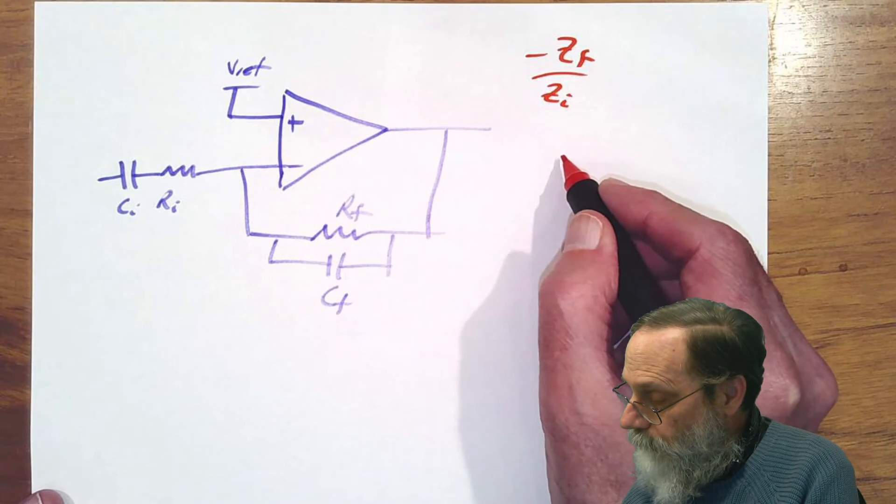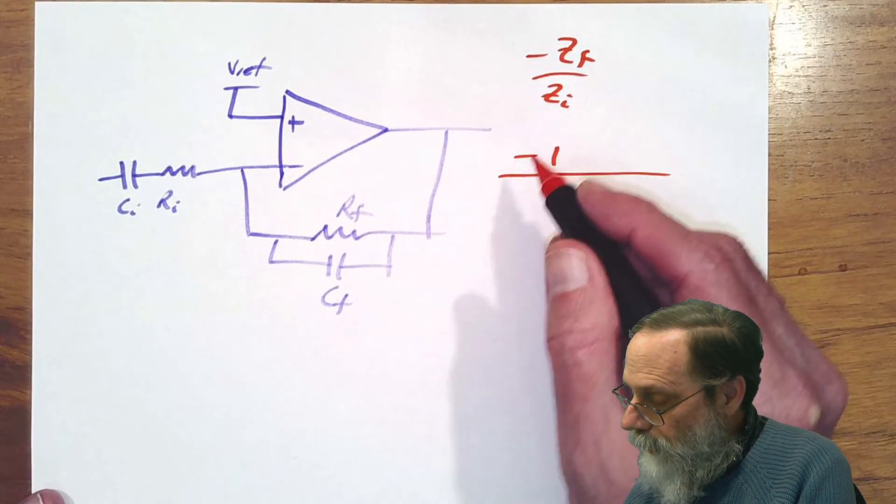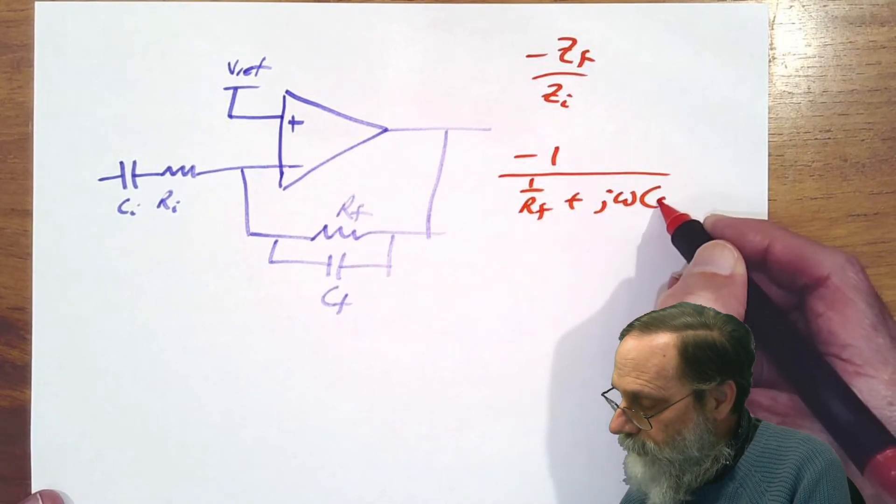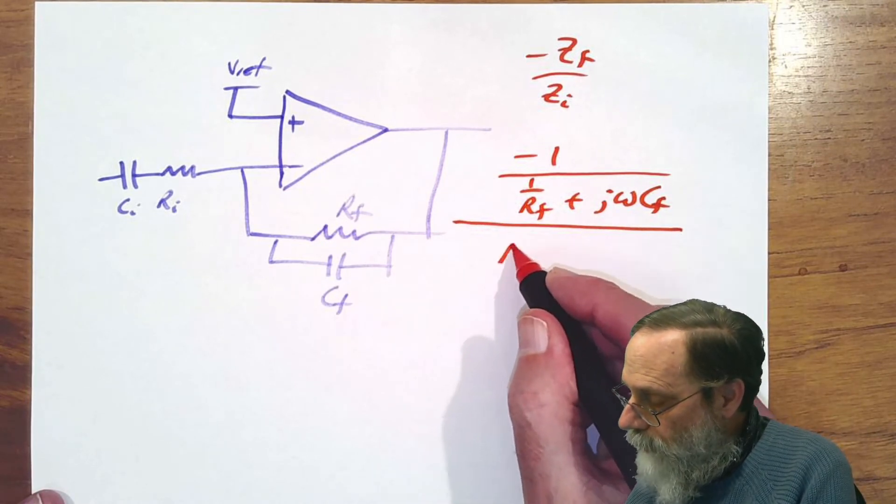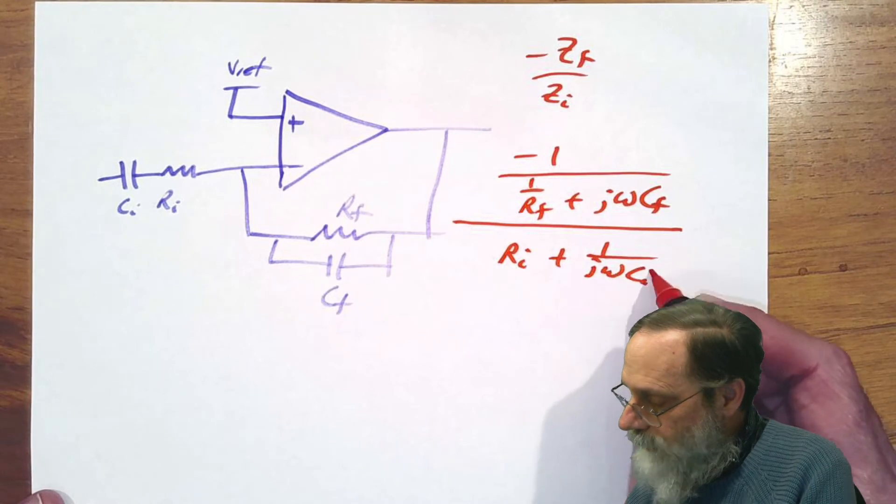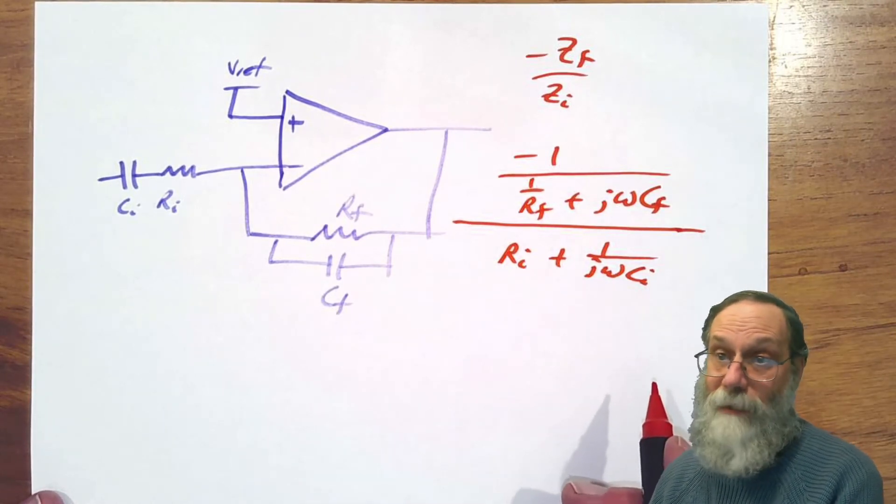We're going to end up with this parallel impedance on the top and this series impedance on the bottom. So that's on top minus 1 over 1 over Rf plus j omega Cf. And then on the bottom we will have Ri plus 1 over j omega Ci.